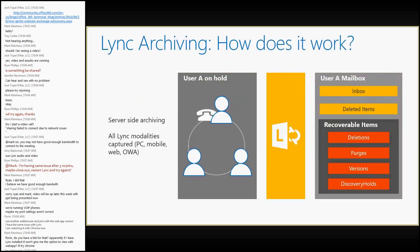When a user is on hold, that information is processed through Lync, which then pushes it through Exchange Web Services to the Purges folder of Recoverable Items. There is no Lync-specific folder; we just use the Purges folder for any Lync content. The hold state is synced from Exchange back to Lync — so if Lync sees the hold state has changed and the user is no longer on hold, Lync will stop pushing that content over to Exchange. Alternatively, you can set it up so Lync always pushes data to Exchange regardless of hold state. Any modality on Lync — PC, mobile, web, or any other way — is captured.